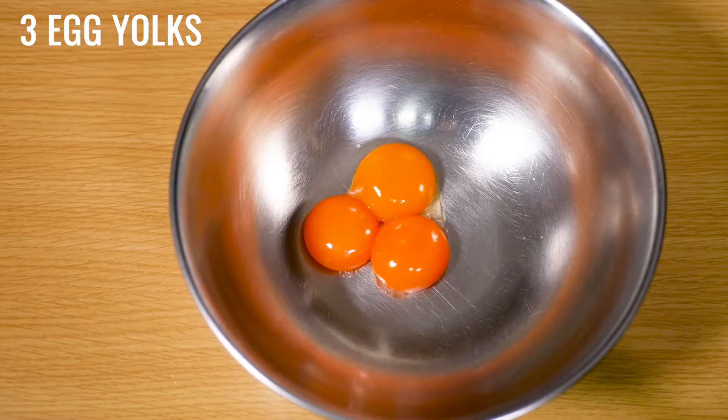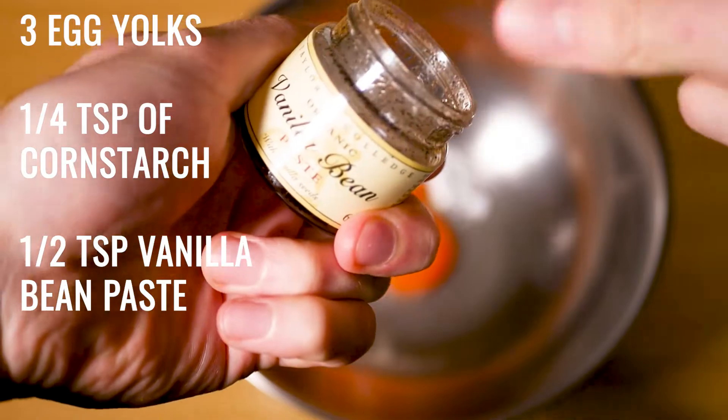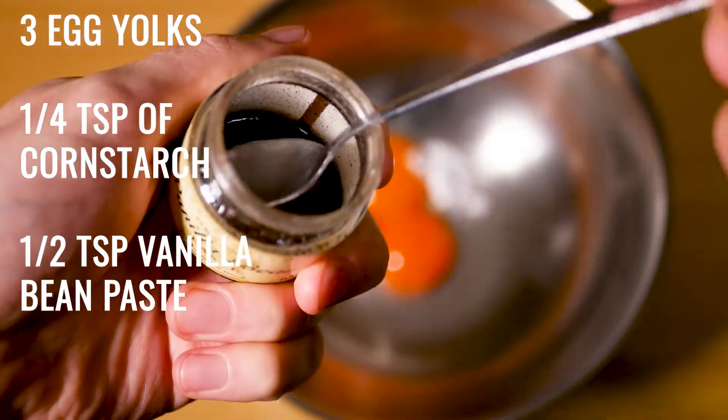After you've turned off the heat, put three egg yolks, a half teaspoon of vanilla bean extract or paste with a quarter teaspoon of cornstarch in a bowl and whisk together.